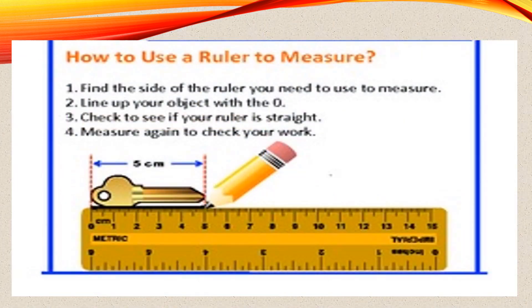You can also see how to use a ruler to measure. You have to find the side of the ruler you need to measure. Line up the object with the zero mark. Check to see if your ruler is straight and measure again to check your work. Small objects — as I told you — you measure in centimeters: like a pencil, stick, comb, book, or eraser. But a ruler cannot measure all objects.